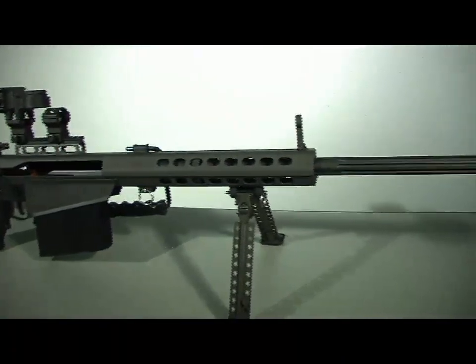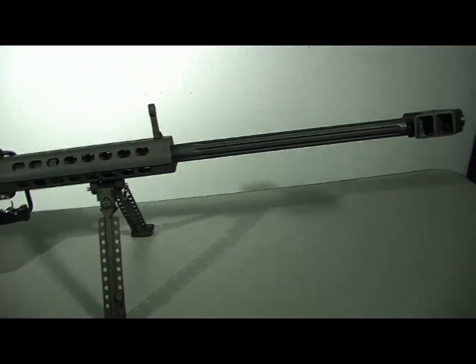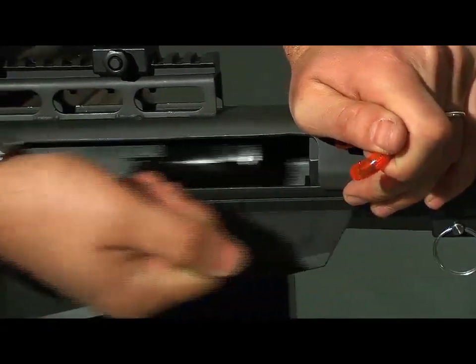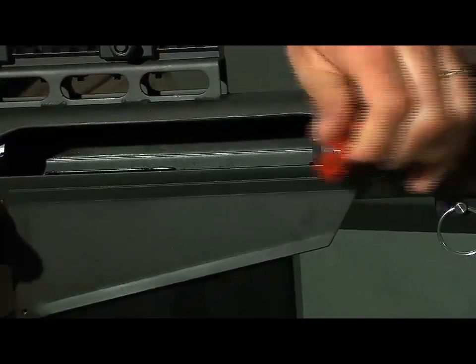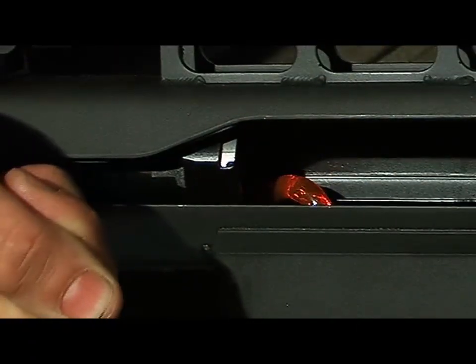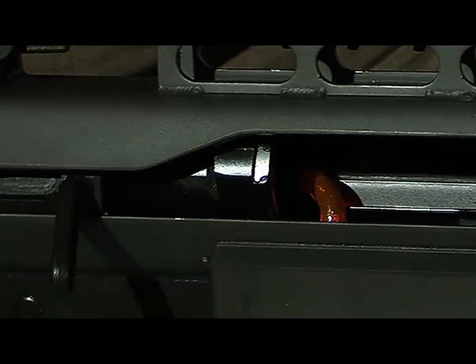This is a Barrett .50 cal sniper rifle. In order to properly clean the Barrett .50 cal from breech to muzzle, you must insert the bore reflector chamber flag between the bolt face and the magazine to keep the bolt from riding forward.